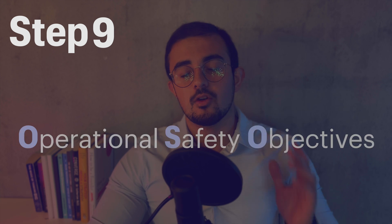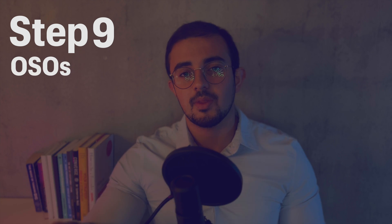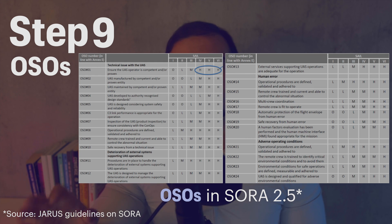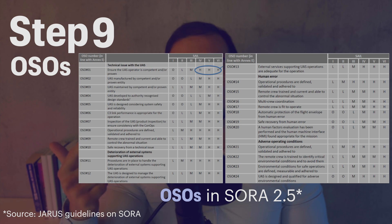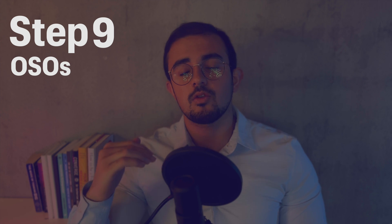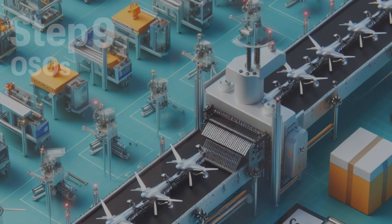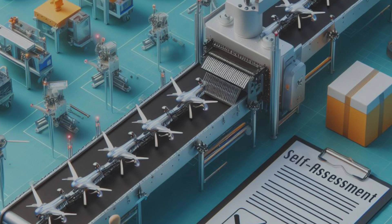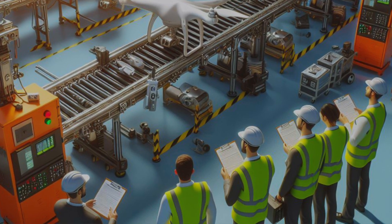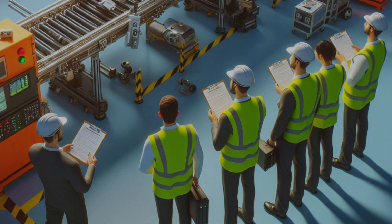Step 9 introduces the Operational Safety Objectives, or OSOs for short. There are 24 OSOs, and the robustness level of each is identified based on your SAIL score. The OSOs cover 4 main areas: technical issues with the UAS, deterioration of external systems supporting the UAS operation, human error, and adverse operating conditions. For example, one OSO requires the drone to be manufactured by a competent entity — a low robustness level requires the manufacturer to self-declare its standards, while a high robustness level requires a third-party company to assess the manufacturer's standards and procedures.